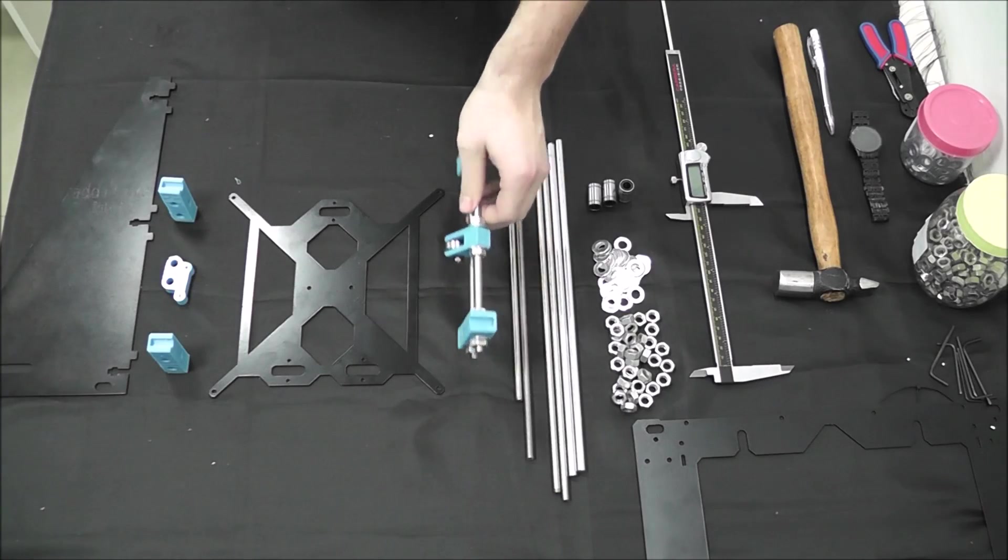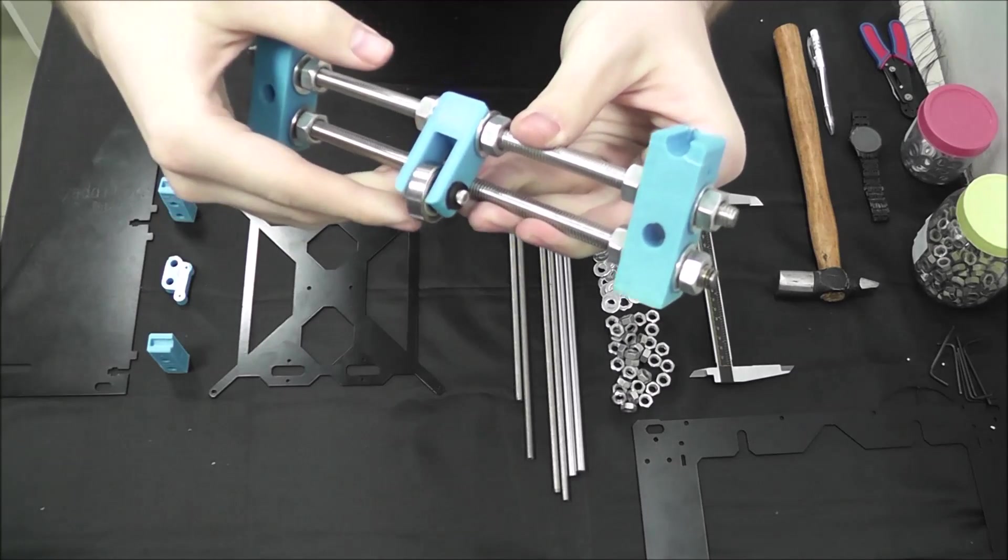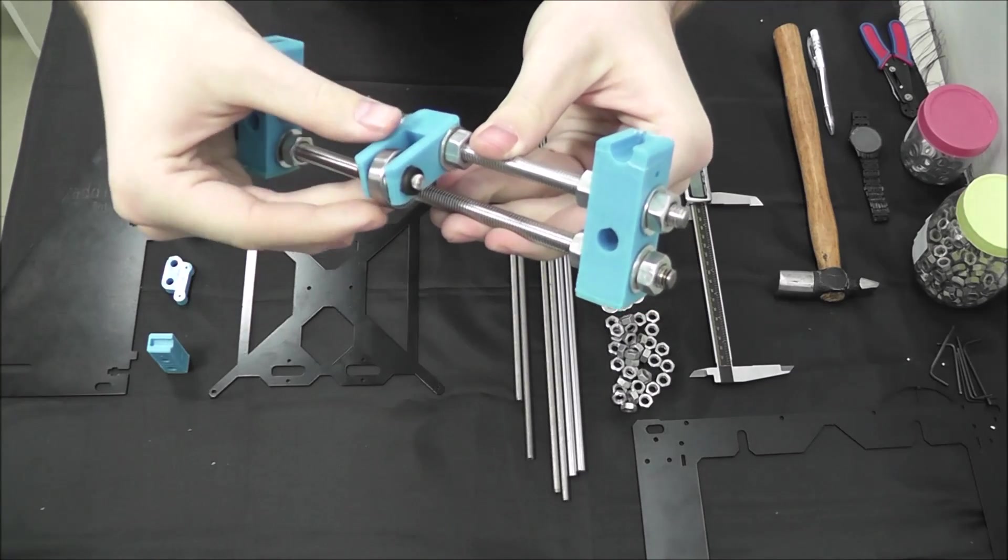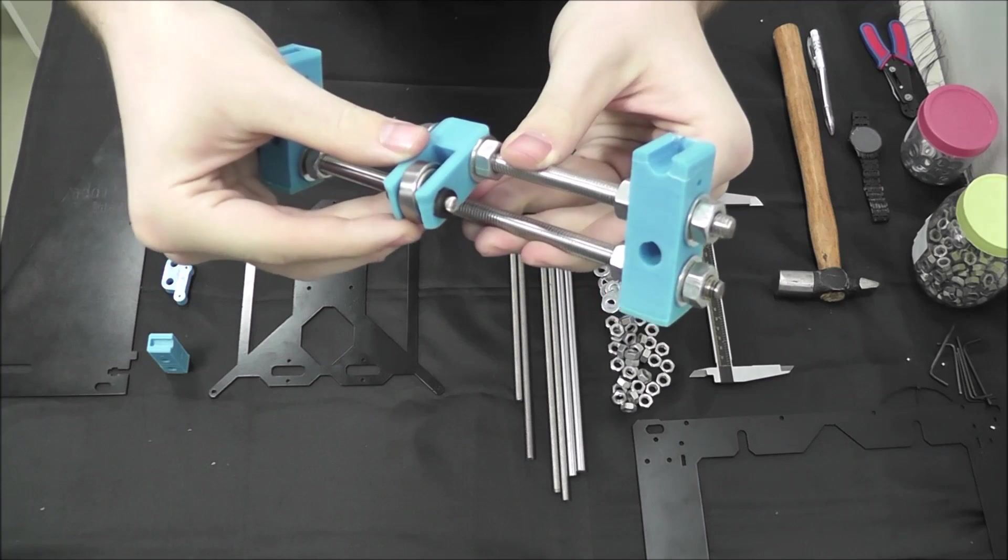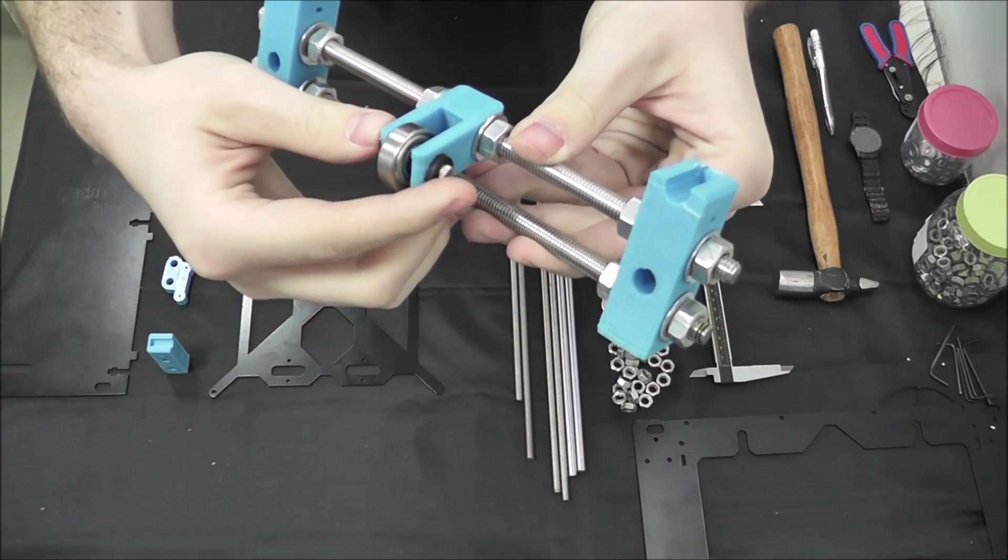So here we've assembled the front part of the y-axis. You'll notice we use two XNs and one belt holder. Fitted inside the belt holder is a 608ZZ roller bearing held in by a 25mm M3 bolt.